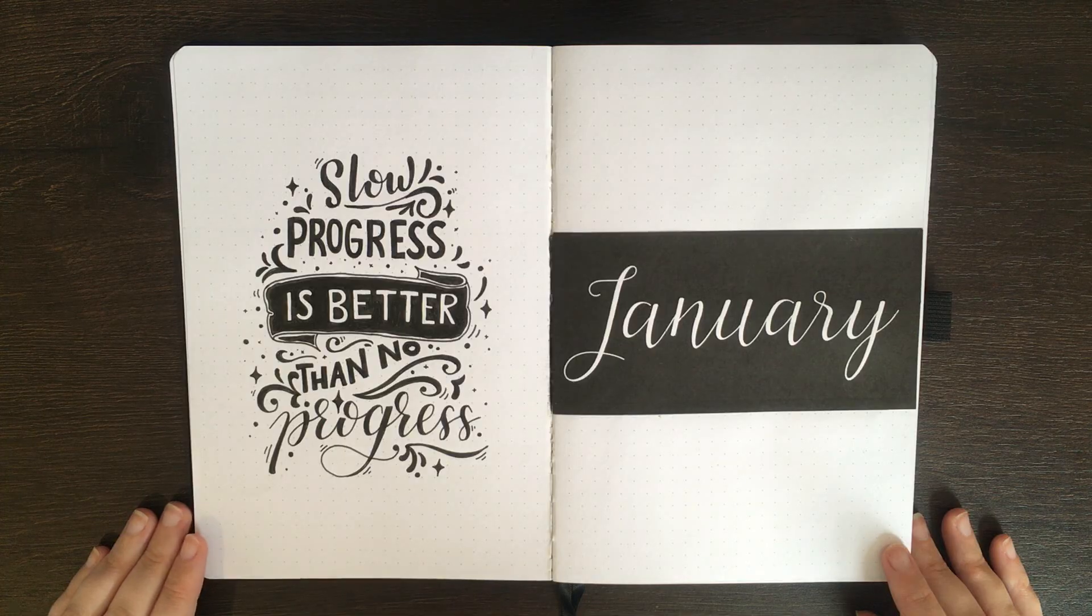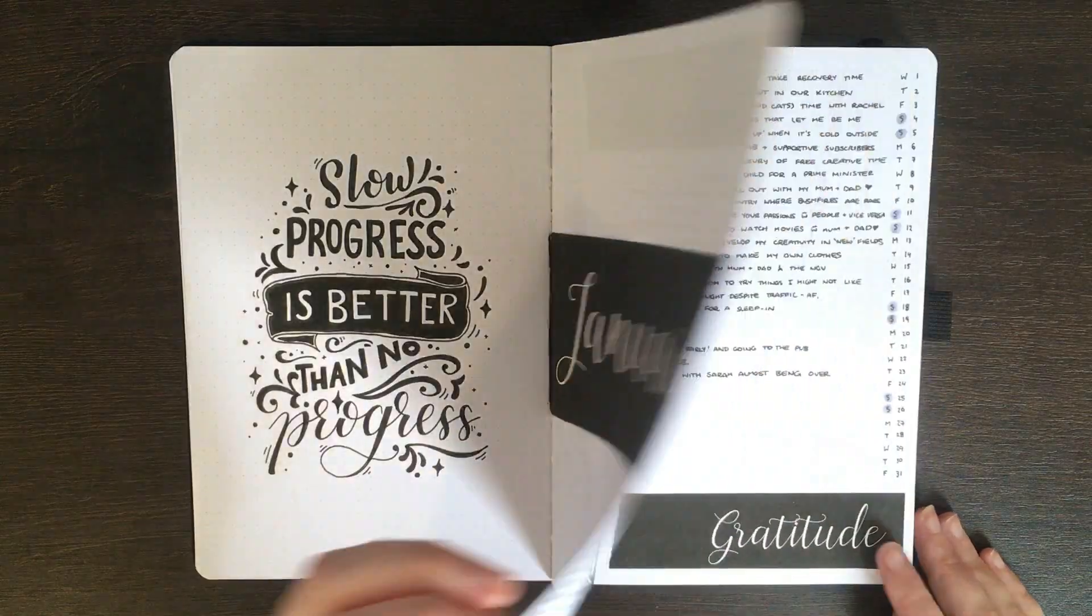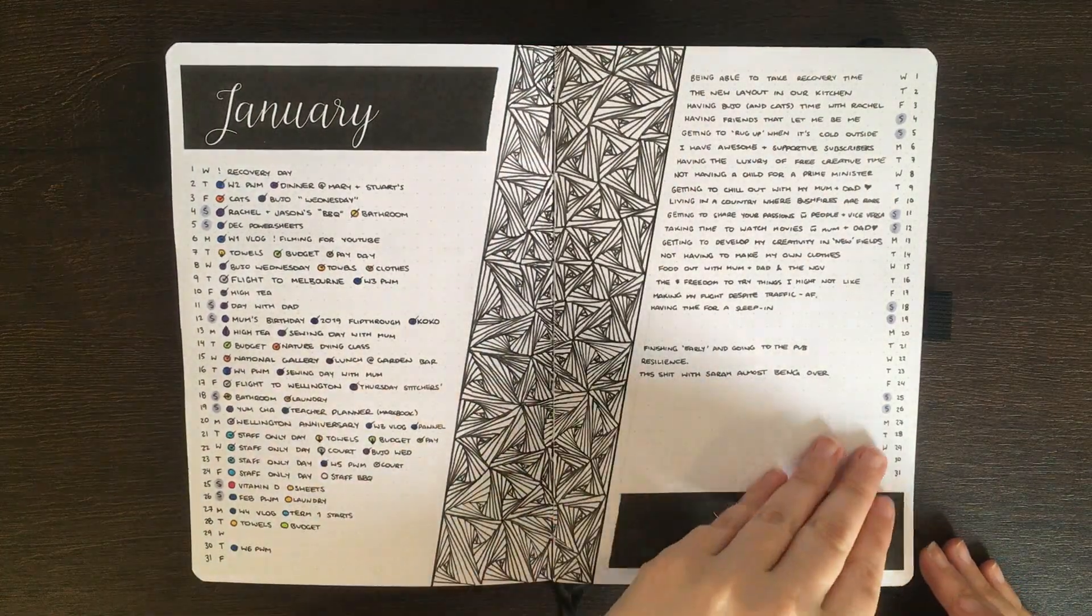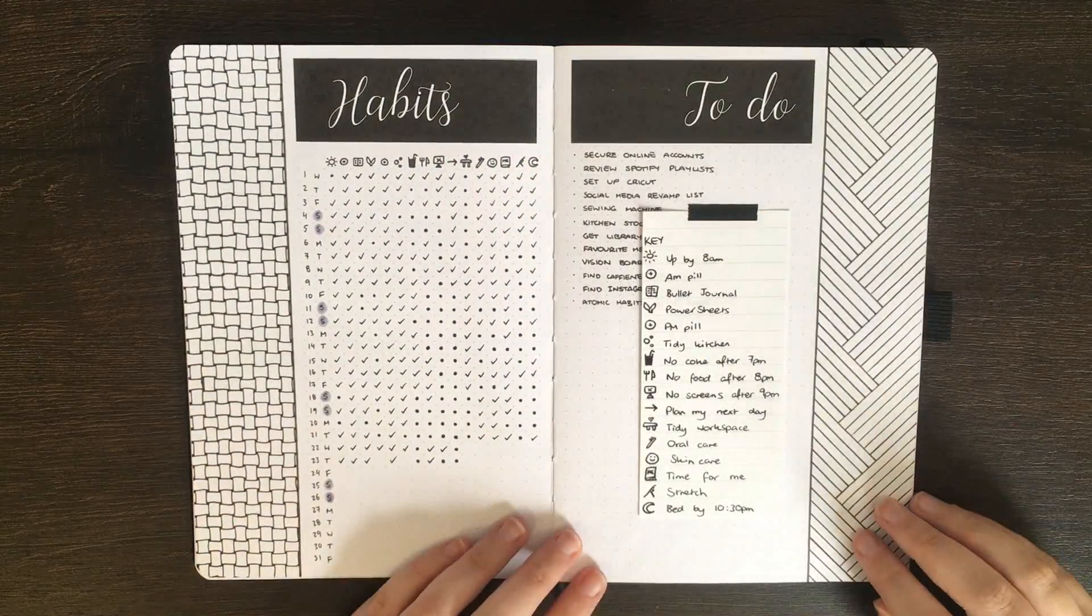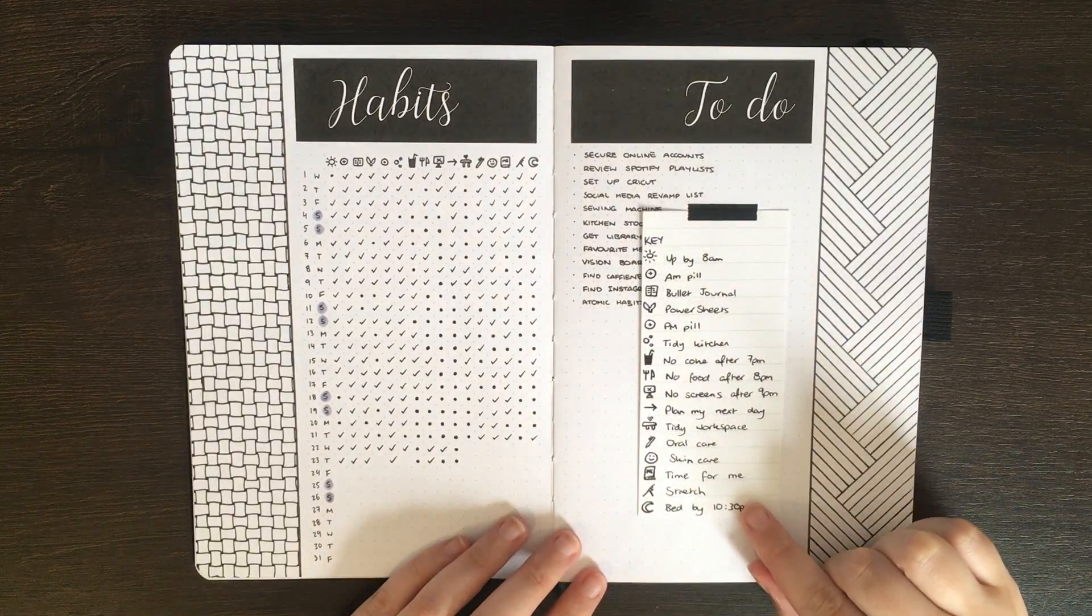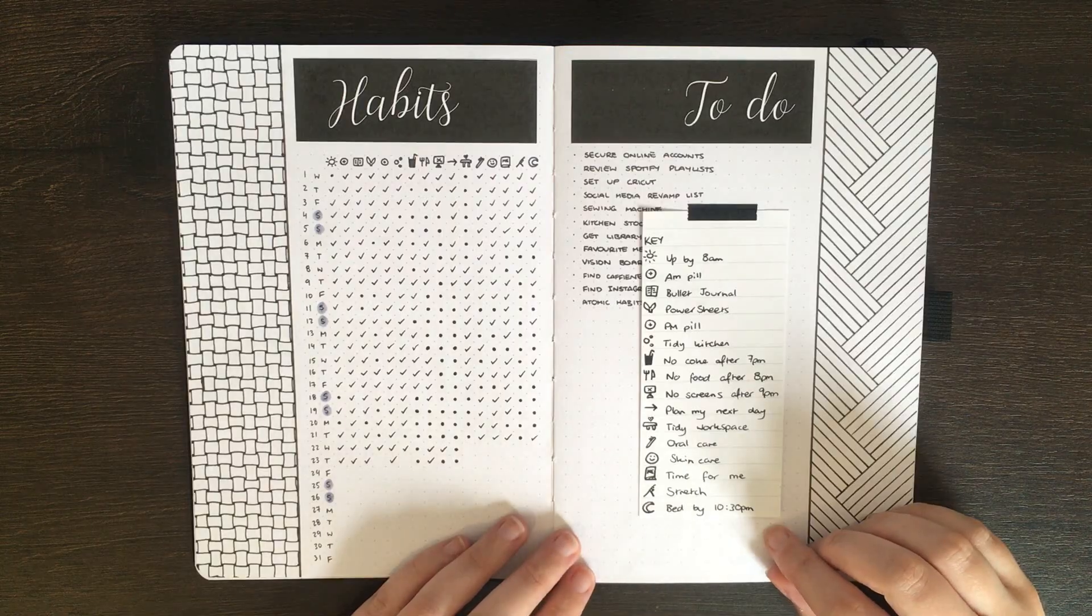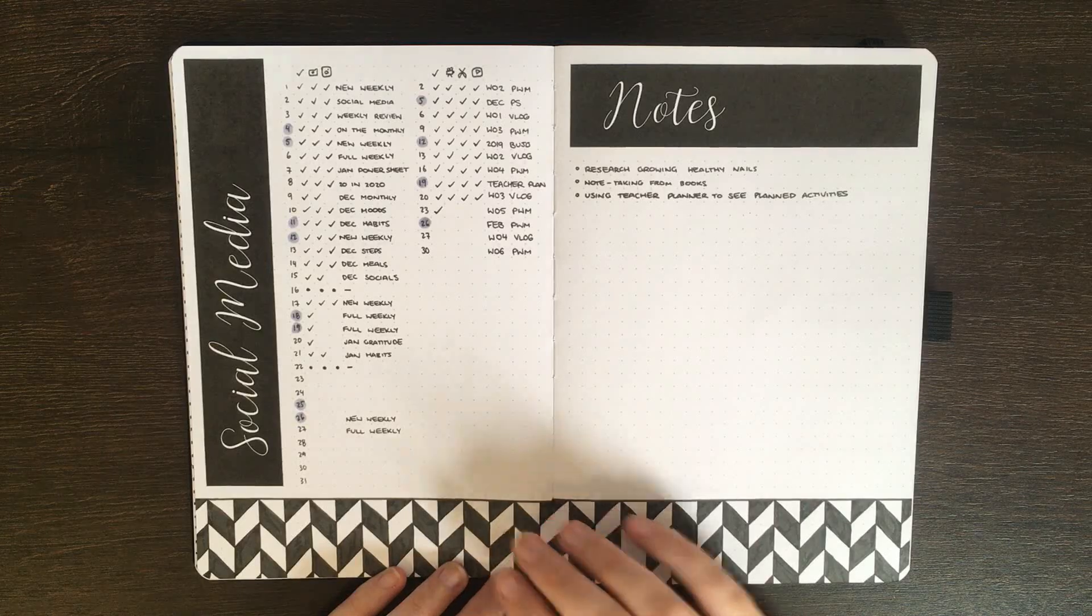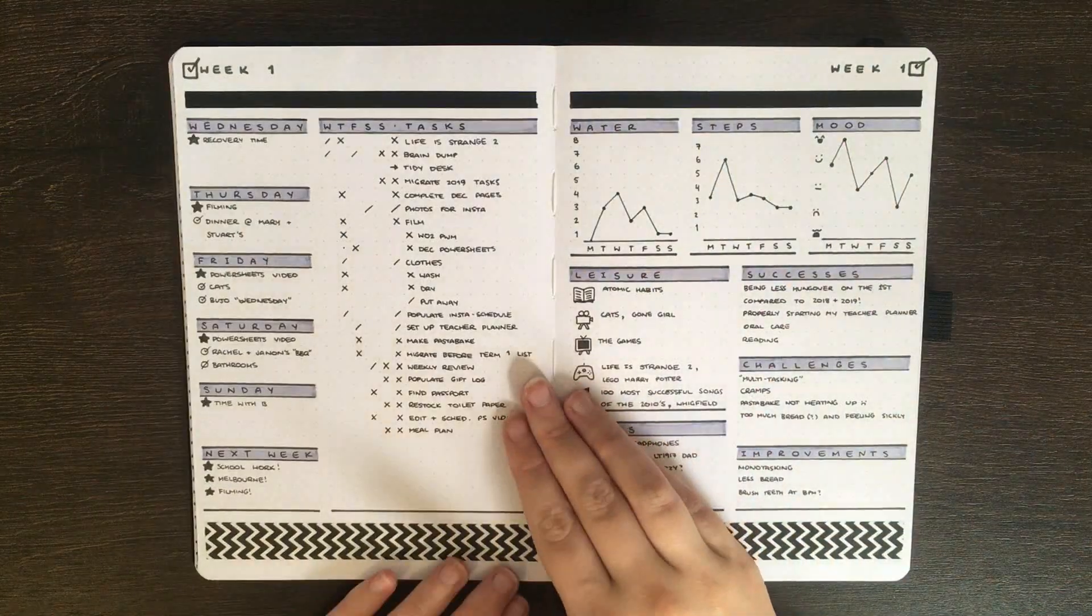Having a flip through though, we started off with my quote page and cover page. We had my monthly log and gratitude log. My habits tracker and to-do list. For the habits tracker, I also put in this little piece of paper that had my key on it, just because I was tracking a couple of things that I don't typically track. We then had my social media scheduler and a notes page.